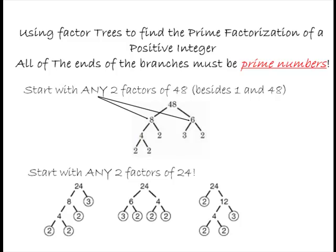How do we find the prime numbers that go into a given number? In this example, we have 48. We're starting with the number 48. It doesn't really matter what two divisors of 48 you choose. I chose eight and six. Since neither of those are prime numbers, we're going to keep on going.